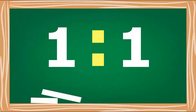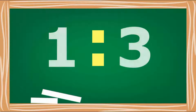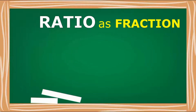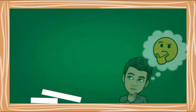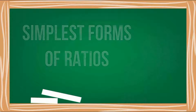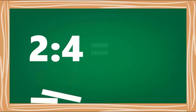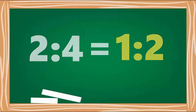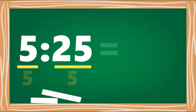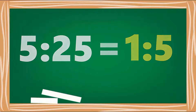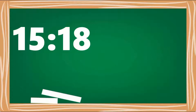Here is an example of a ratio: 1 to 1. Most applications of ratio are expressed in fraction form, like 1/4, 2/1, 5/3. Just like fractions, ratios must be simplified. For example, both numbers can be divided by 2, so that ratio becomes 1 to 2. Both numbers can be divided by 5, giving 1 to 5. And both numbers can be divided by 3, simplifying to 5 to 6.